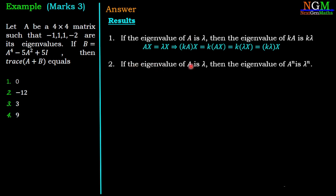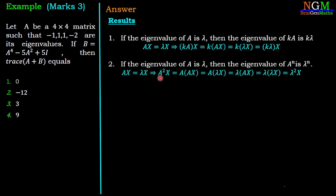Second result: if the eigenvalue of A is λ, then the eigenvalue of Aⁿ is λⁿ. We can easily prove this too. If AX = λX, then A²X = A·(AX) = A·(λX) = λ·AX = λ·λX = λ²X. Therefore λ² is the eigenvalue of A².